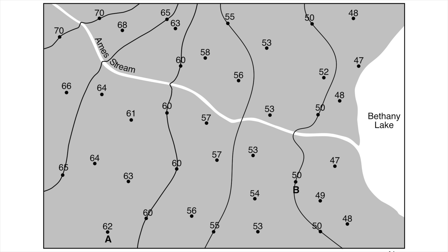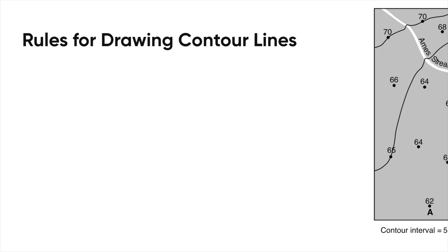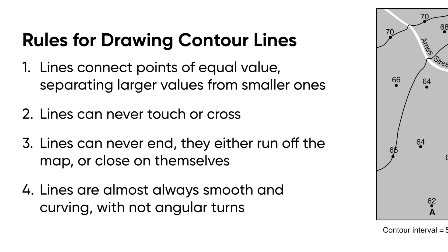Now I have a completed, albeit fairly simple, topographic map. To review: lines connect points of equal value, and the key is to separate higher from lower values. Lines can't touch or cross. They never end — they either go to the edge of the map or close on themselves. And they tend to be smooth and curving. We'll keep this in mind as we go into our future videos.